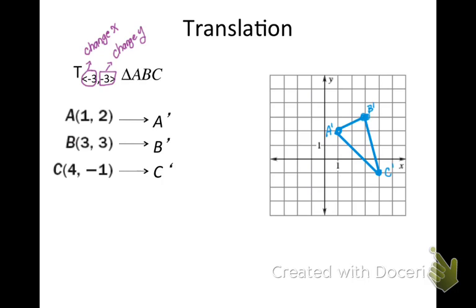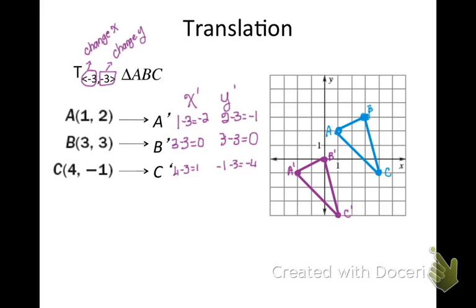So let's take our A coordinate or our A point and figure out our new coordinates by subtracting 3 from both and plotting that point. And then our B and then our C, naming it A prime, B prime, C prime. And that is how I have translated that triangle.